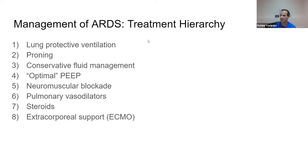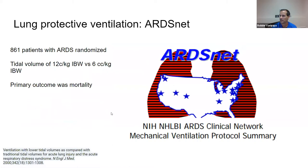Here's how I think about the hierarchy of treatments in ARDS. The top priorities are lung protective ventilation and proning, followed by conservative fluid management, finding optimal PEEP individually rather than using a PEEP table, neuromuscular blockade, pulmonary vasodilators like epoprostenol or nitric oxide, and finally steroids and ECMO. We'll go through each of these and some of the literature behind them.